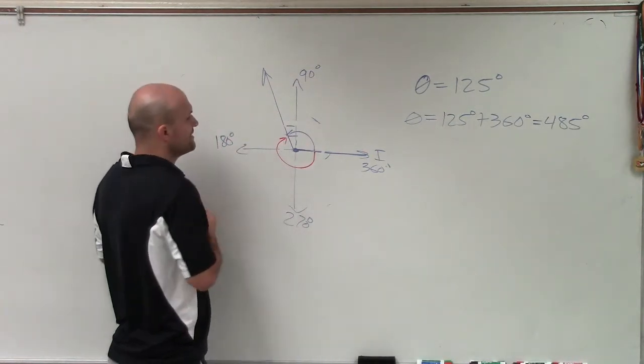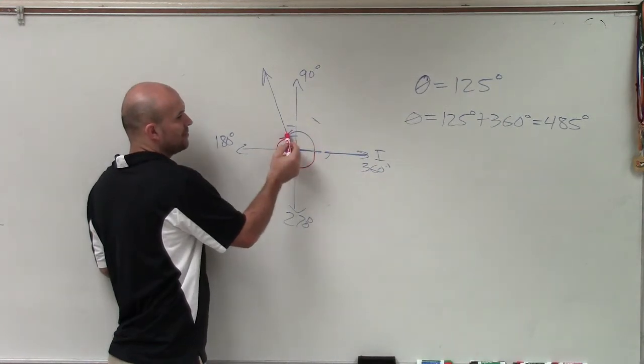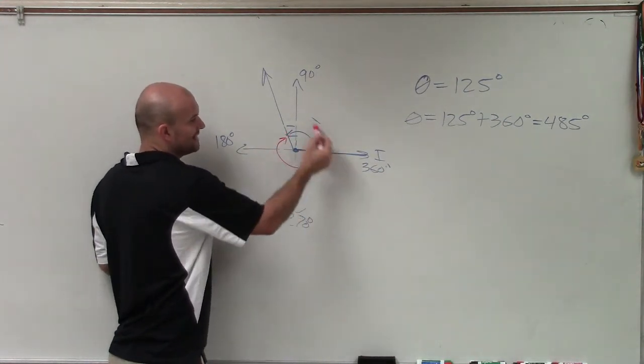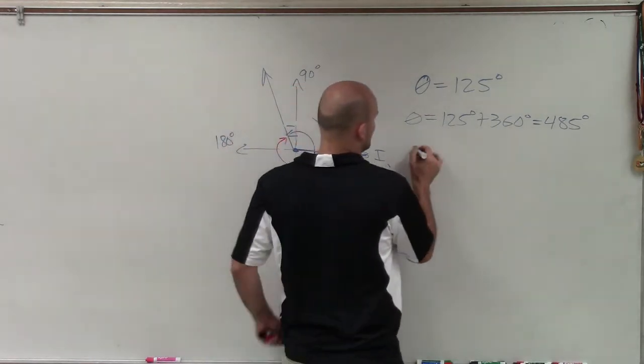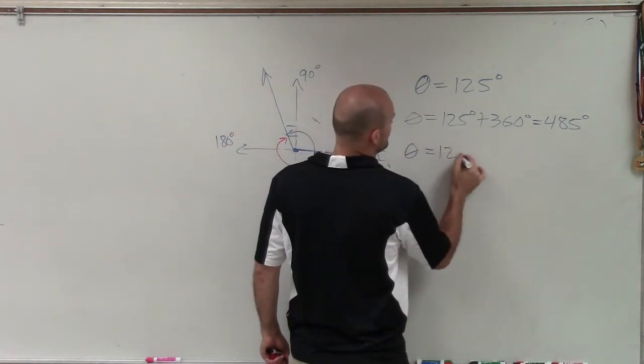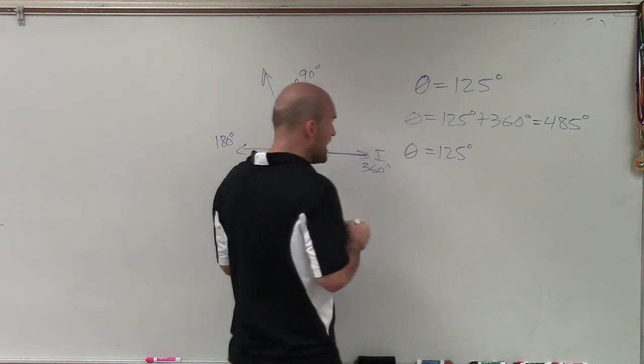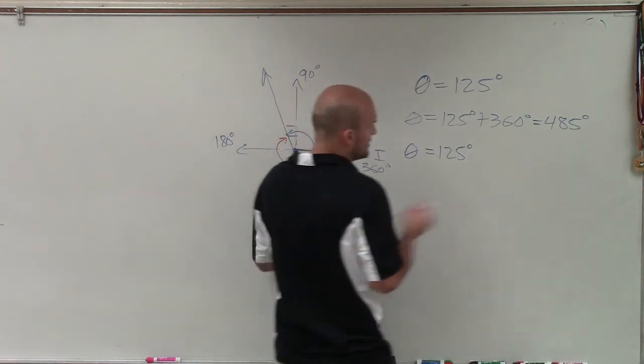So to determine that, what I have is I have this angle, but now I'm going to be subtracting this whole distance. So to find that angle, I'm just going to now, instead of adding 360 degrees, I'm now going to subtract 360 degrees.